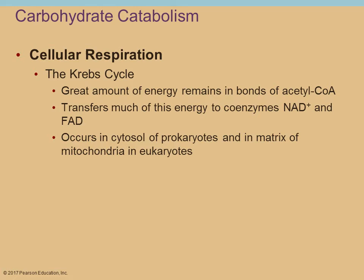The Krebs cycle in prokaryotic cells occurs in the cytosol. In eukaryotic cells, the pyruvic acid generated from glycolysis would be transported from the cytosol into the mitochondria, where everything else occurs — inside the inner matrix. Prokaryotic cells don't have mitochondria, so everything occurs in the cytoplasm.